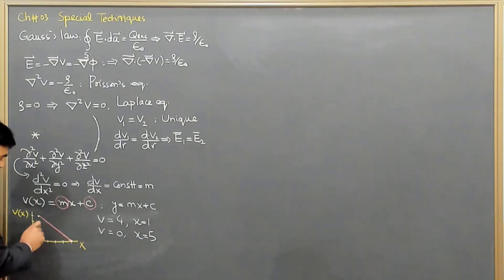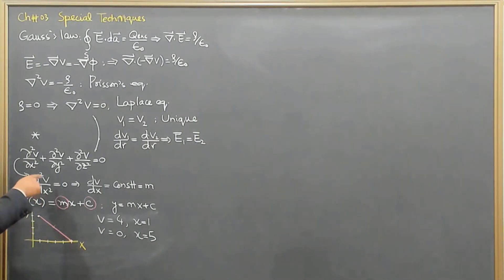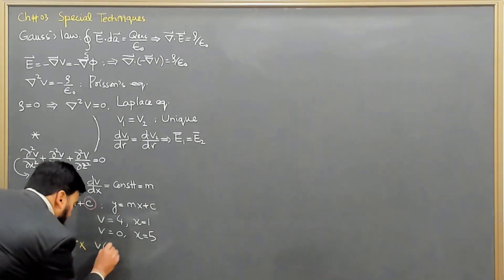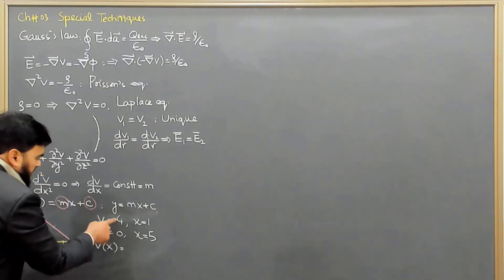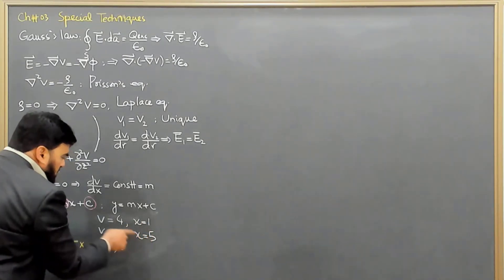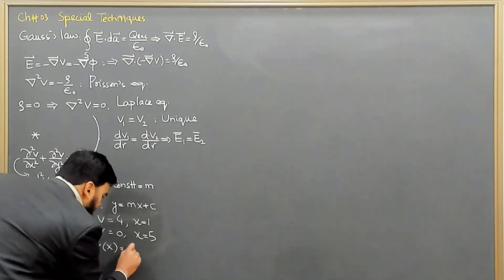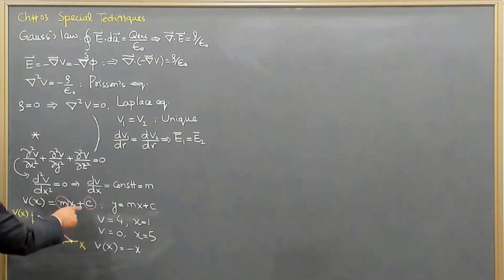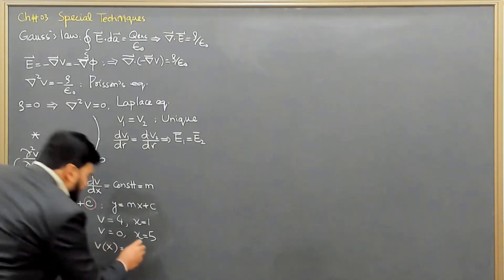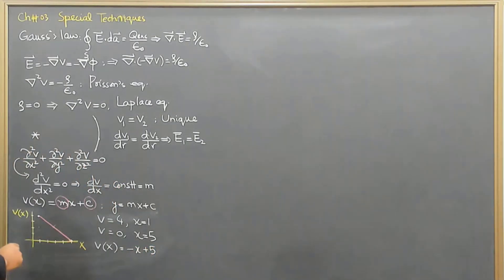This straight line may have a zero slope, a positive slope, or any other form, but in one dimension the solution of the Laplace equation is a straight line. This makes our equation V(X) = MX + C, where M equals (V1 - V2)/(X1 - X2) = (4 - 0)/(1 - 5) = -4/4 = -1, and then C equals 5. So the equation becomes V(X) = -X + 5.